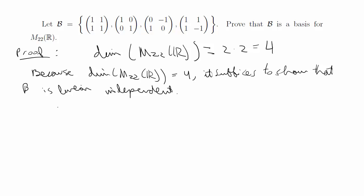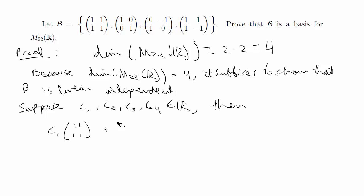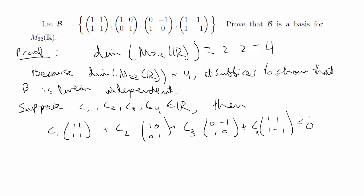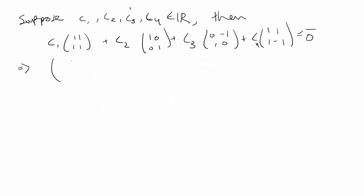The way to show linear independence is by putting scalar coefficients and using the definition: if you have C₁ times matrix one plus C₂ times matrix two plus C₃ times matrix three plus C₄ times matrix four equal to the zero matrix, you have to show the coefficients must all be zero. Suppose C₁, C₂, C₃, C₄ exist in ℝ as scalars, and we set that linear combination equal to the zero matrix. We're basically trying to show the only solution is that all coefficients are zero.